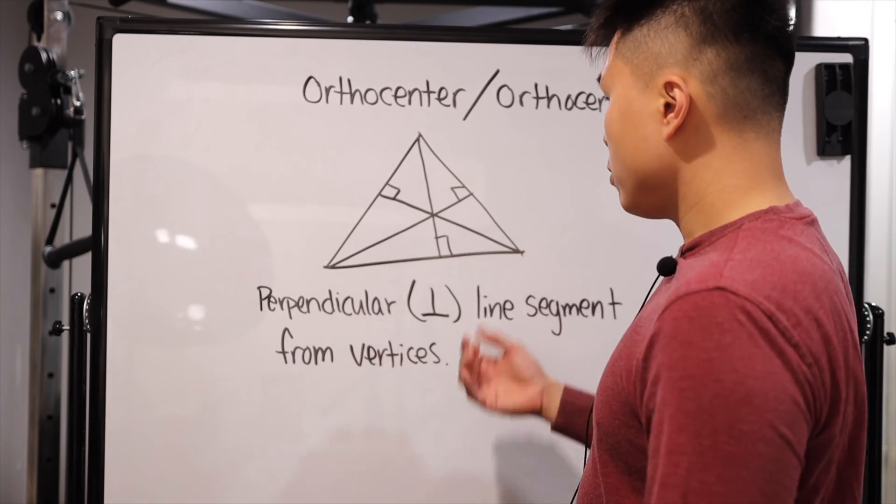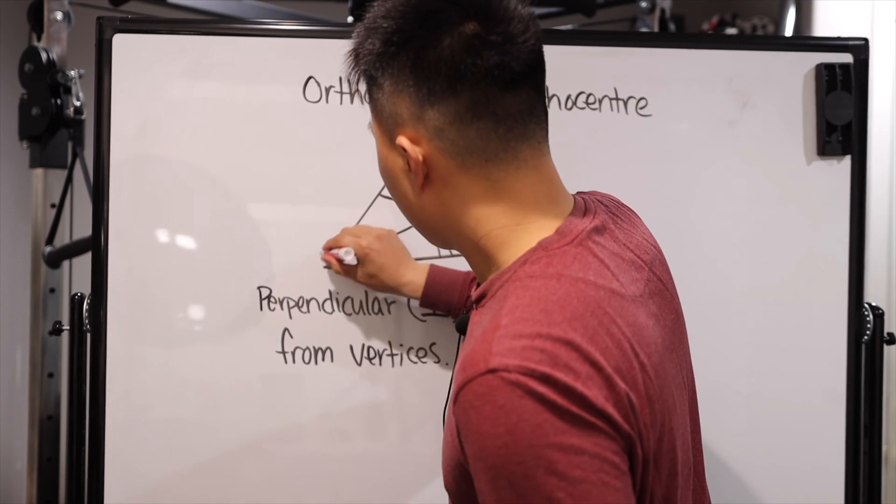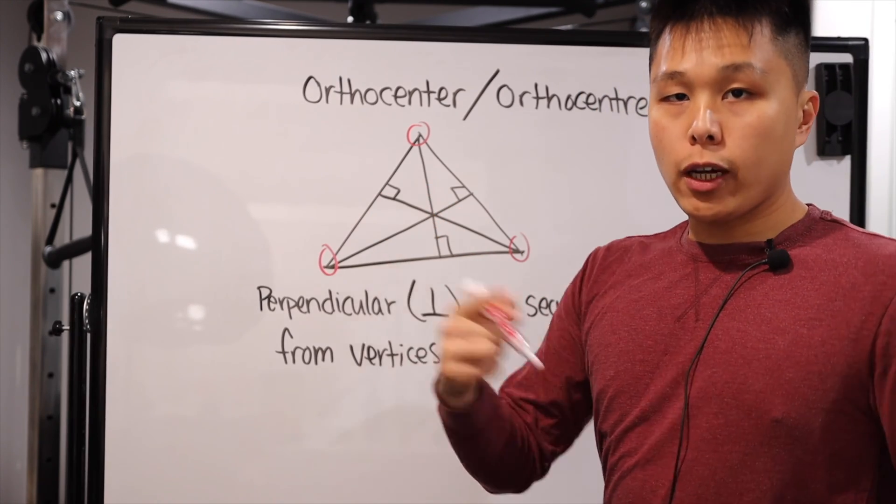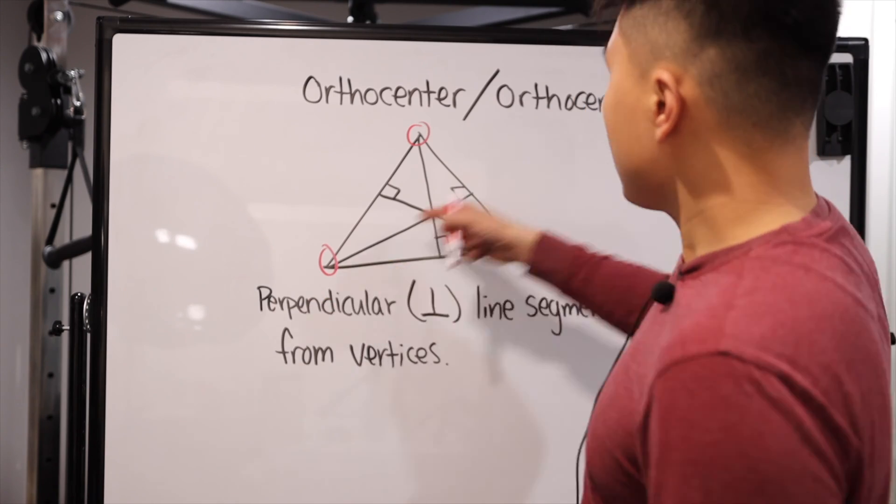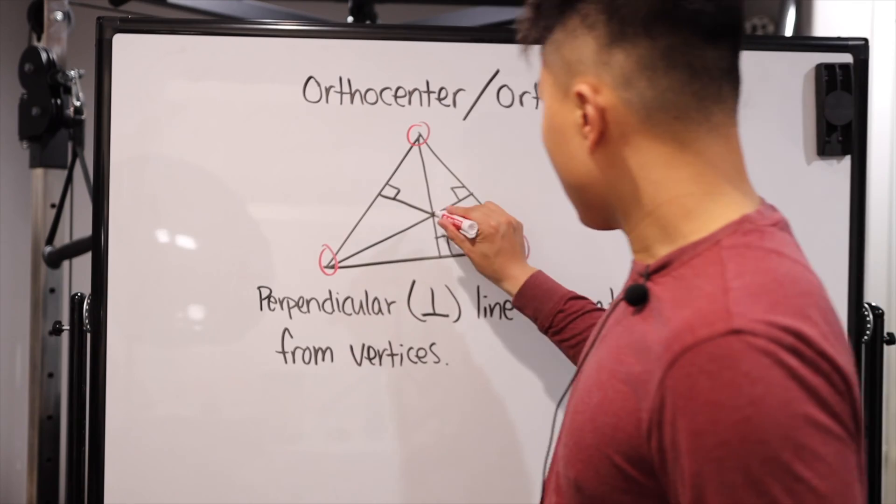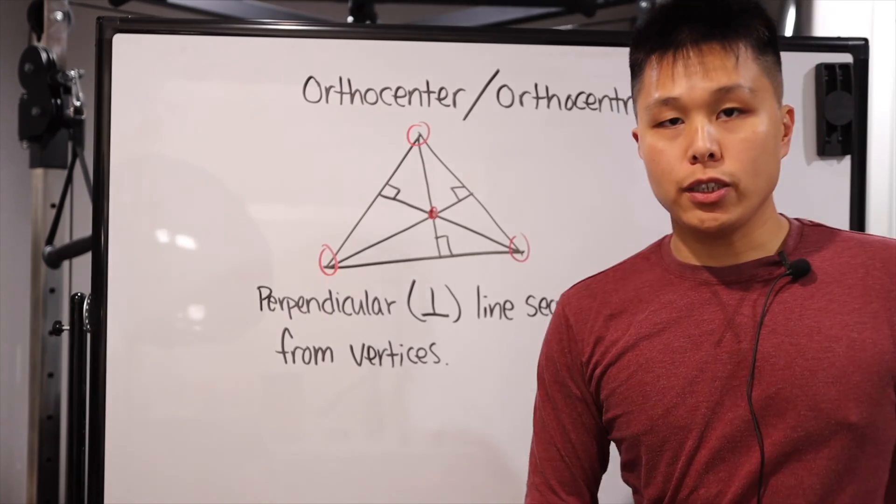With any triangle, you're going to pick the vertices, which are these little points right here of the triangle, and then you're going to draw lines across that are perpendicular. Now, the miraculous thing is that all three lines will intersect each other, and that intersection right here is one of the center of a triangle known as the orthocenter.